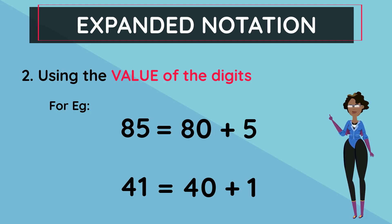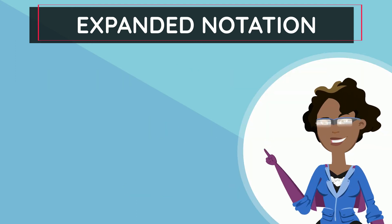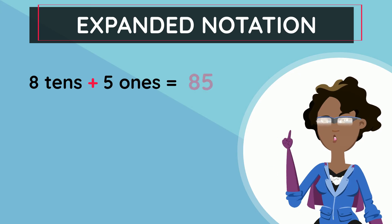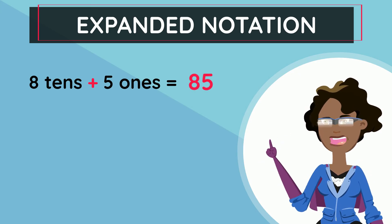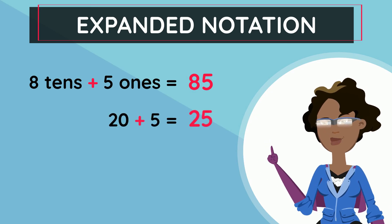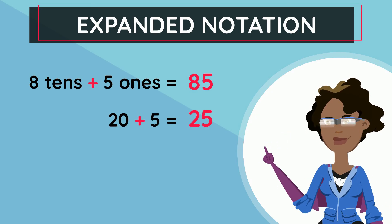Now let's put the two methods together. 8 tens added to 5 ones is equal to 85. Another example using that way is 20 added to 5 will give us 25. Similarly, the same example from before: